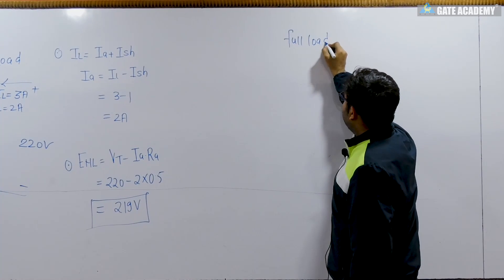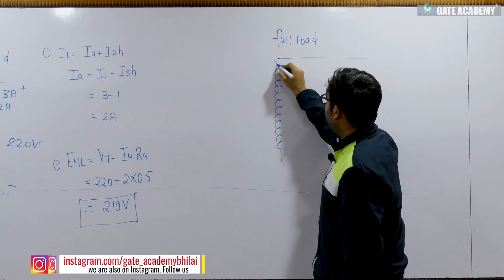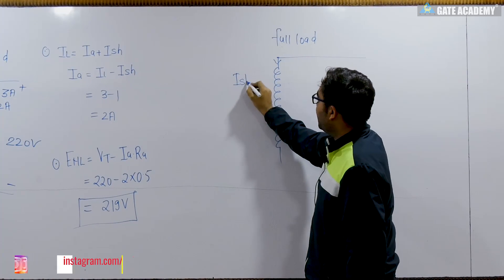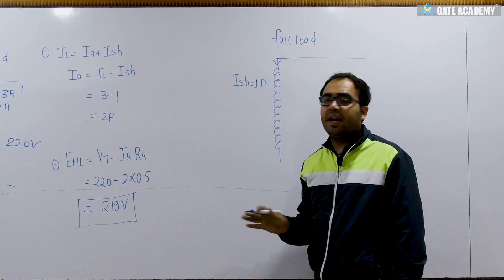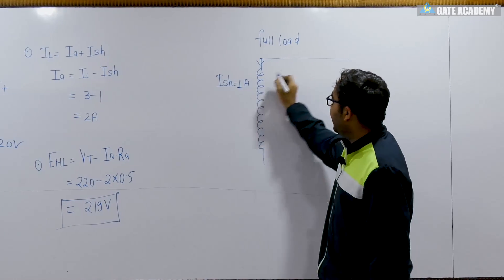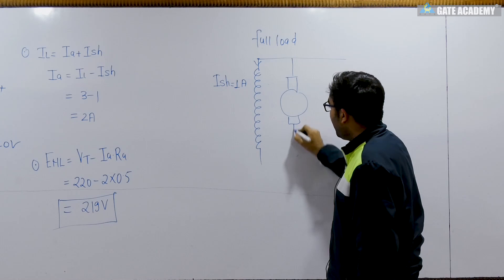So what will happen in full load? The current drawn by the motor is given around 25 ampere. So shunt current will be equal to still 1 ampere because we are not going to change the resistance or the voltage. So shunt current is not going to change.